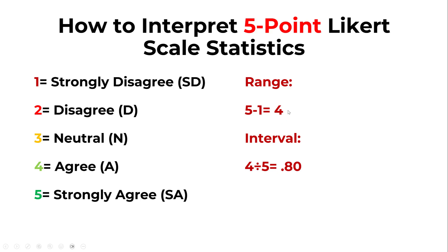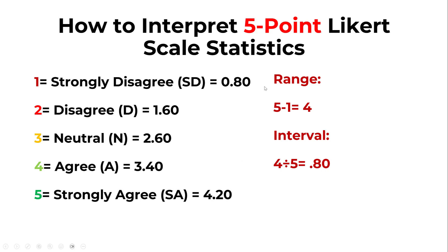We interpret the mean given this range. Take five, the highest value of the Likert scale, minus one, which equals four. The interval is four divided by five, which is 0.80. We use 0.80 to define the lower and upper limits. Since the lowest value is one, we start with one plus 0.80, which is 1.80.